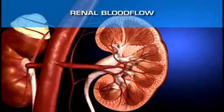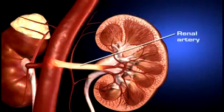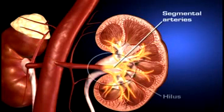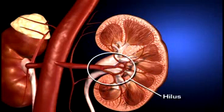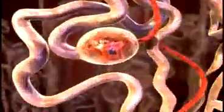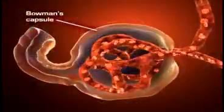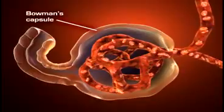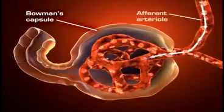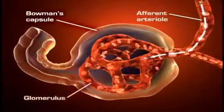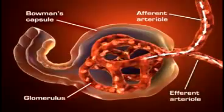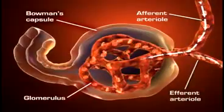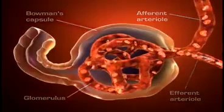Each kidney is supplied with blood by a single renal artery that arises on its respective side of the aorta before dividing into five segmental arteries that enter the hilus. Within the kidney, each segmental artery branches into several lobular arteries. The lobular arteries further subdivide to form interlobular arteries, which branch off into afferent arterioles. Blood flows into the glomeruli through the afferent arterioles, and blood flows out of the glomerulus through the efferent arterioles. The afferent and efferent arterioles regulate glomerular capillary pressure by selectively dilating or constricting.